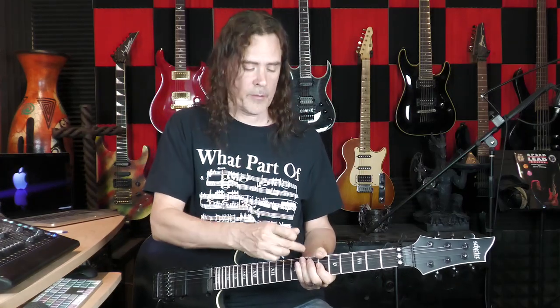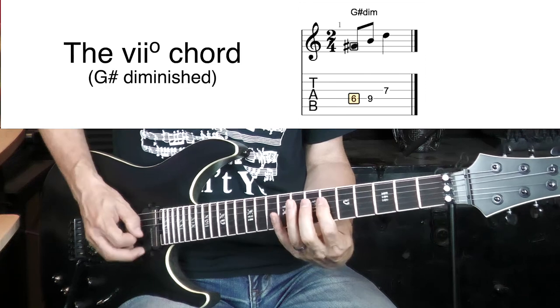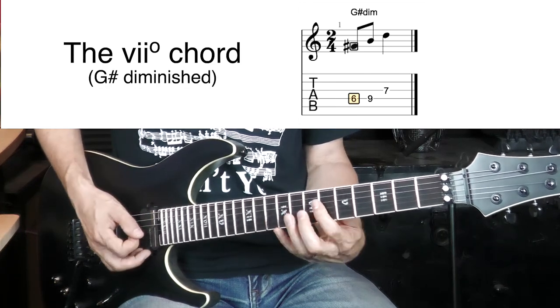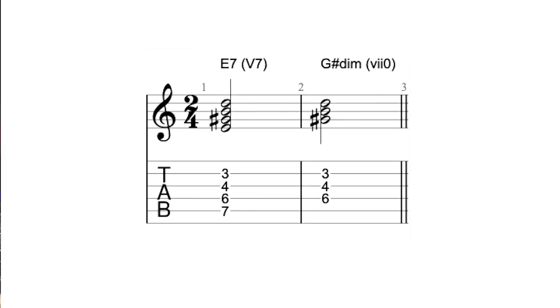Now if we take that 5 chord and drop out the root — drop the 5th out of it — and play just the other 3 notes, now we're playing the notes that are in the 7 chord. In other words, if we added harmonies on top of 7, we have 9 and 11, or 7-2-4. Again, a very unstable chord. But you can see that the 7 chord — the diminished chord built on the 7th step of the scale — is actually housed within the 5-7 chord. They're really the same thing in a manner of speaking; the difference is whether the E is in there on the bass.